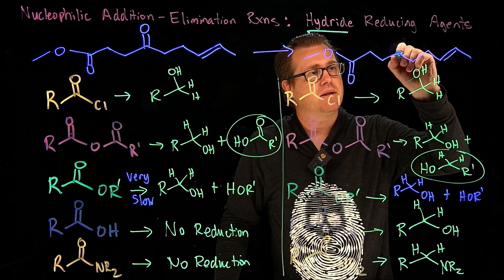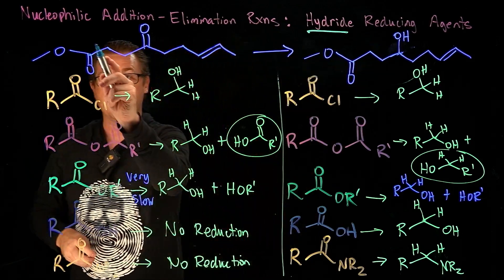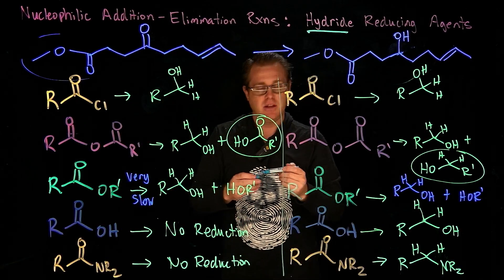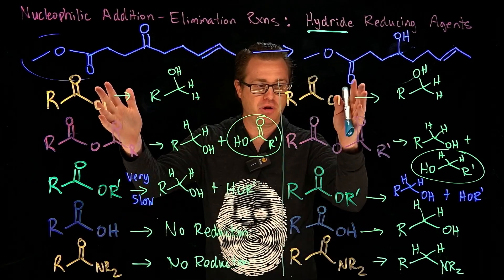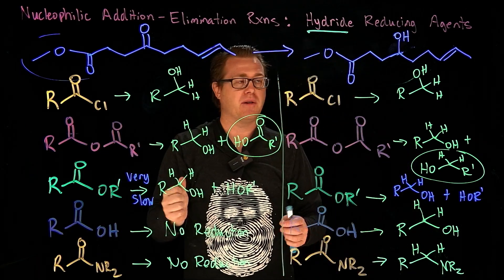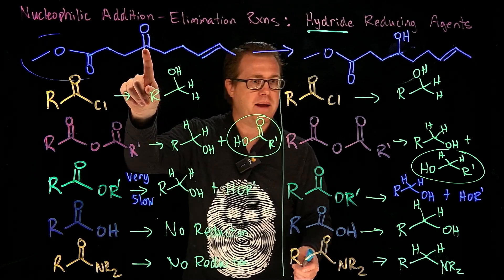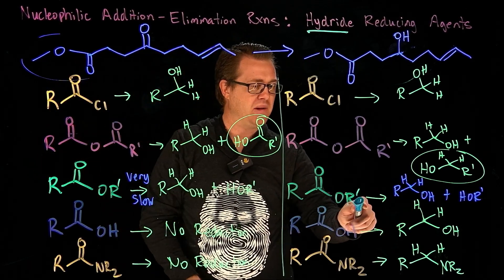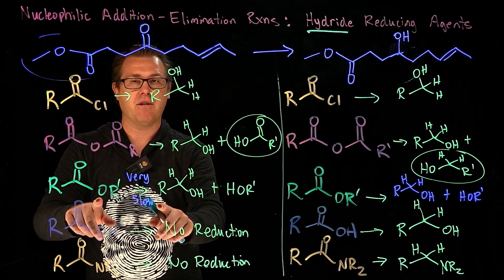So what I want to do is selectively reduce the ketone to an alcohol, but I want to leave the ester right there. I want the ester to stay, and I want the double bond to stay. So which reagent should I use in order to make this transformation happen? If I chose lithium aluminum hydride, we've seen from previous videos that lithium aluminum hydride does in fact reduce ketones. But it begs the question, does it react with esters? And yes, it does. Lithium aluminum hydride does react with esters.